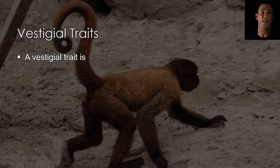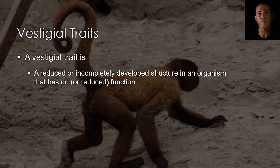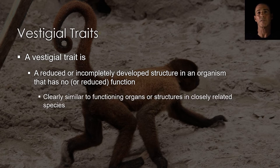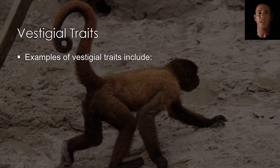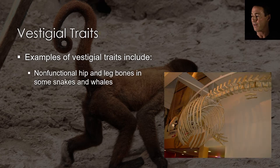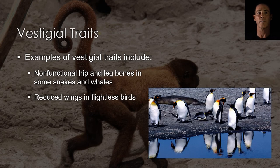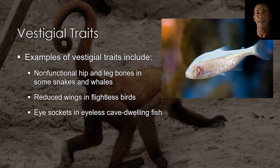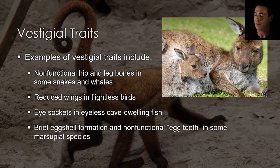Darwin was also the first to provide a widely accepted interpretation of vestigial traits. A vestigial trait is a reduced or incompletely developed structure that has no function or reduced function, but is clearly similar to functioning organs or structures in closely related species. Biologists have documented thousands of examples of vestigial traits. Some whales and snakes have tiny hip and leg bones that do not help them swim or slither. Ostriches and kiwis have reduced wings and cannot fly. Eyeless, blind, cave-dwelling fish have eye sockets. Even though marsupial mammals give birth to live young, an eggshell forms briefly early in their development.